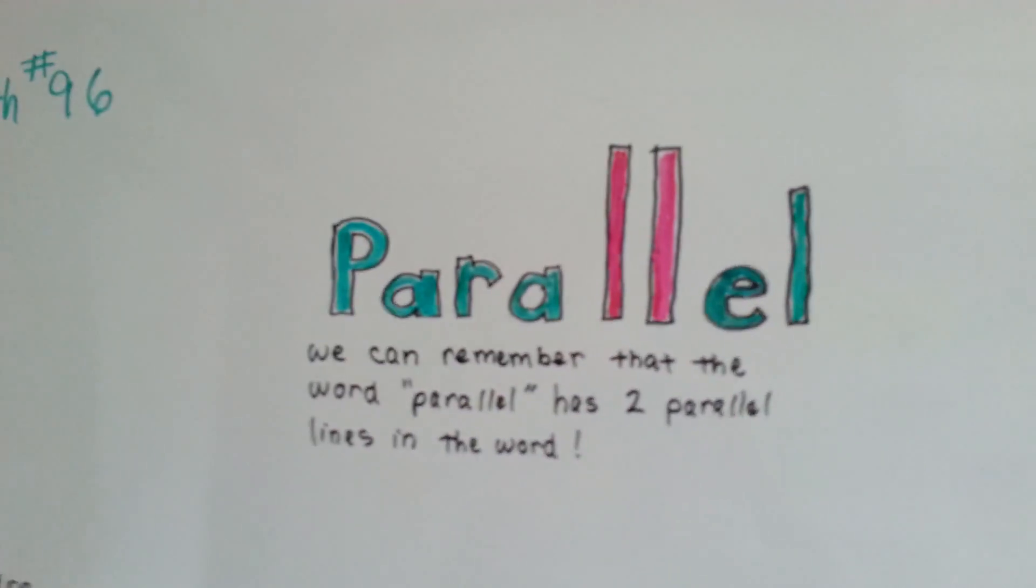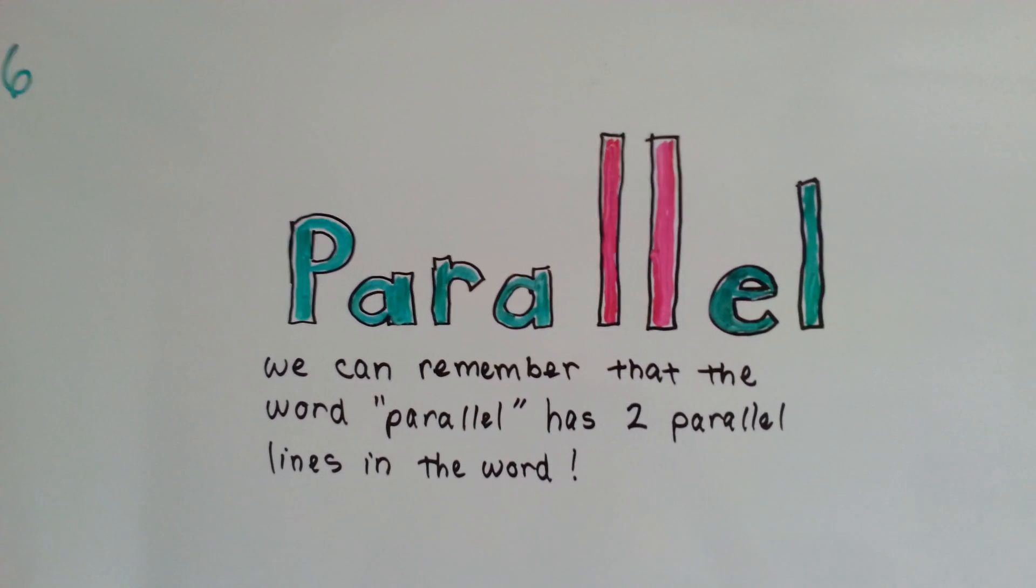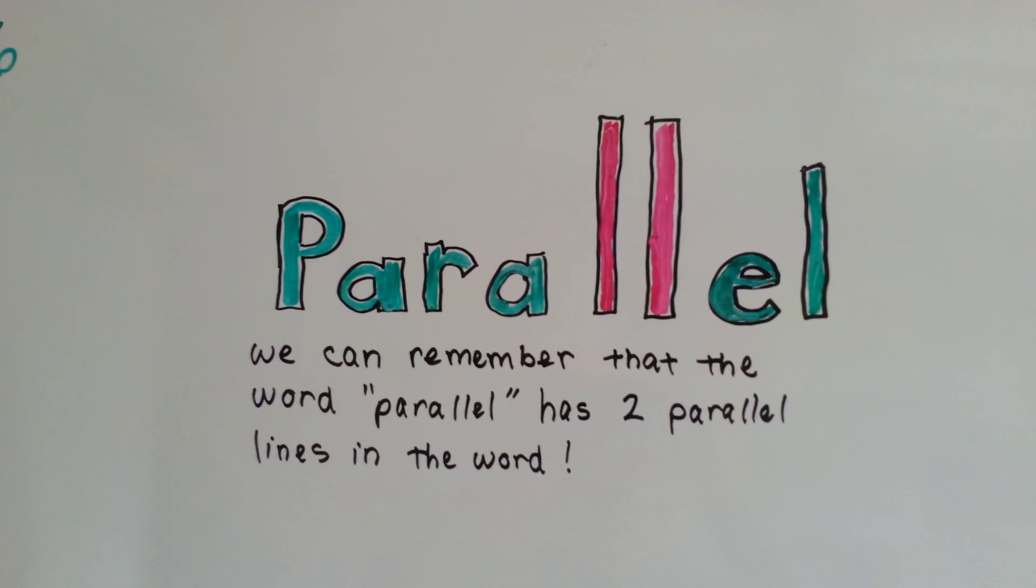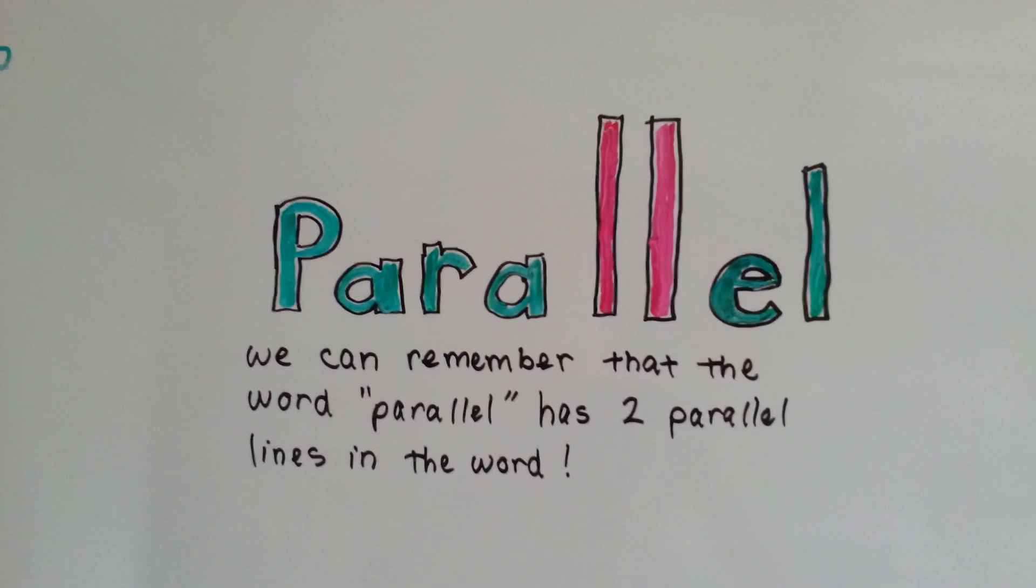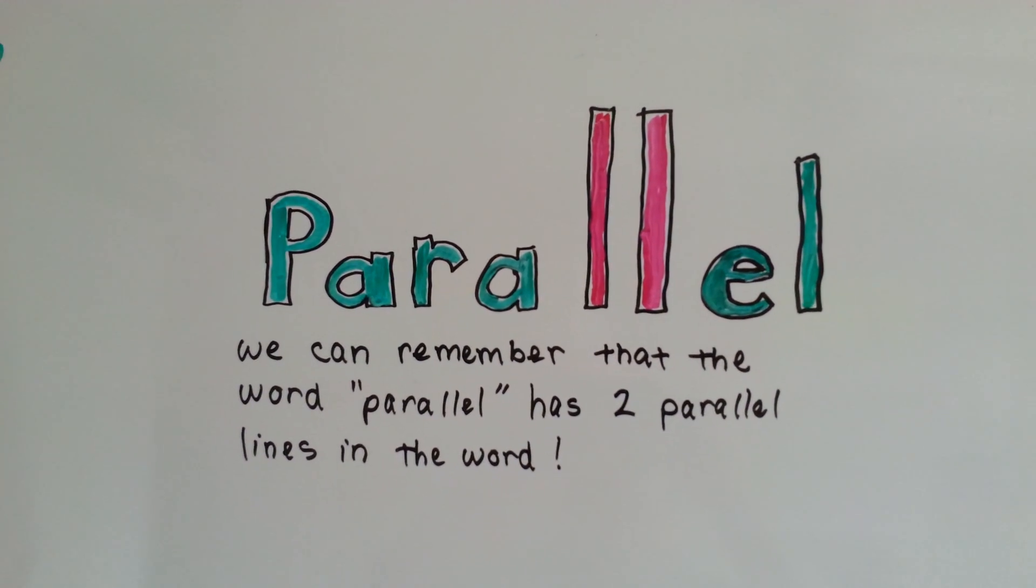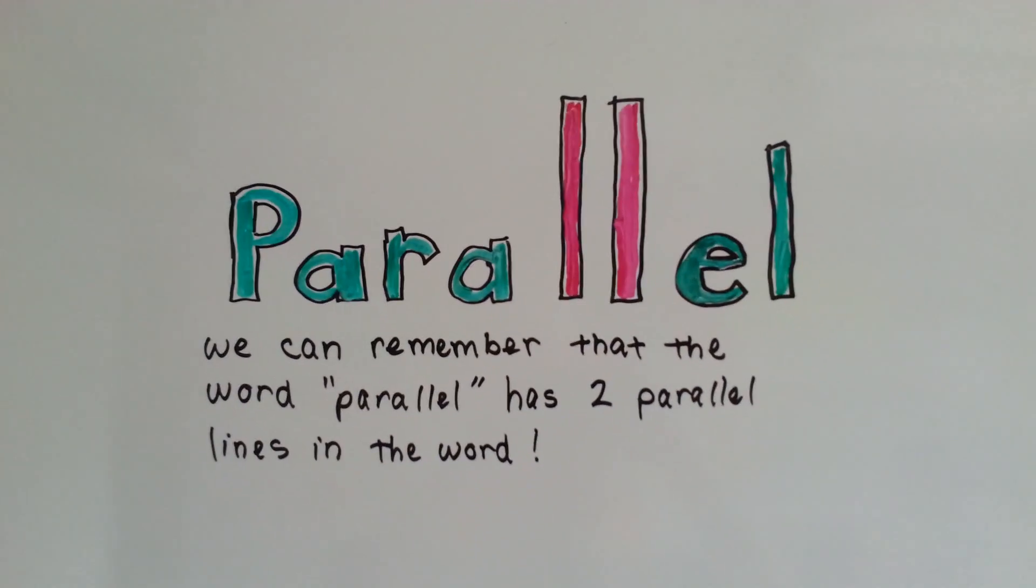One of the easiest ways to remember what parallel lines are is to look at the word parallel. We can remember that the word parallel has two parallel lines in the word. The two L's together, those are parallel lines. Isn't that something? Makes it easy to remember, doesn't it?